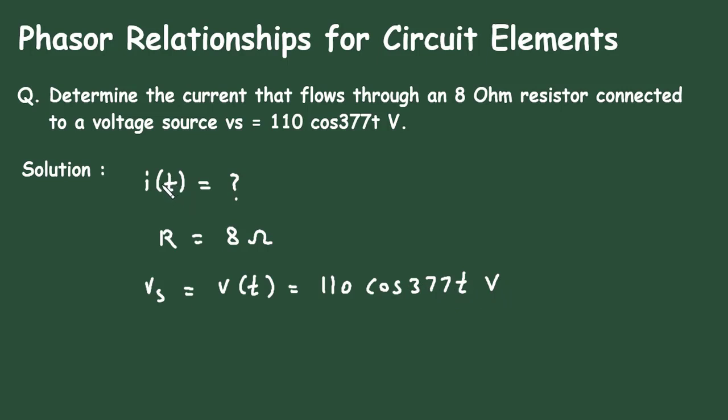So, we have to find I of T. According to Ohm's law, we know that I of T is equal to V of T upon R.